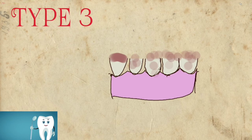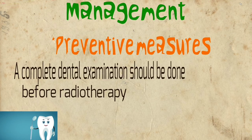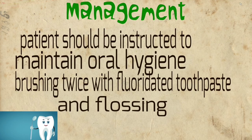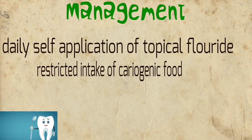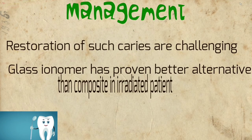Now, moving on to management and preventive measures. A complete dental examination should be done before radiotherapy, including complete examination of dentition, periodontium, and mucosa. The patient should be instructed to maintain oral hygiene by brushing twice with fluoridated toothpaste and flossing. Daily self-application of topical fluoride and restricted intake of cariogenic food are recommended. After radiotherapy, the patient should be kept under supervision and instructed to use fluoride trays. Restoration of such caries is challenging, and glass ionomer is mostly a better alternative than composite.